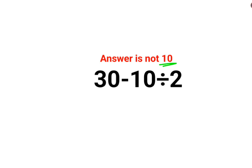A lot of people thought that the answer for this one is supposed to be 10. Now why? Because they thought that 30 minus 10 is 20, divided by 2 gets you 10. That is incorrect.